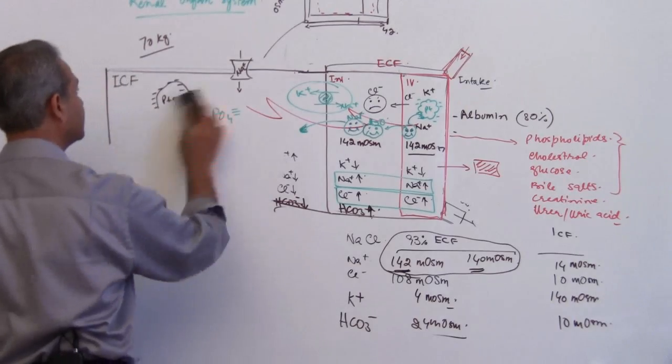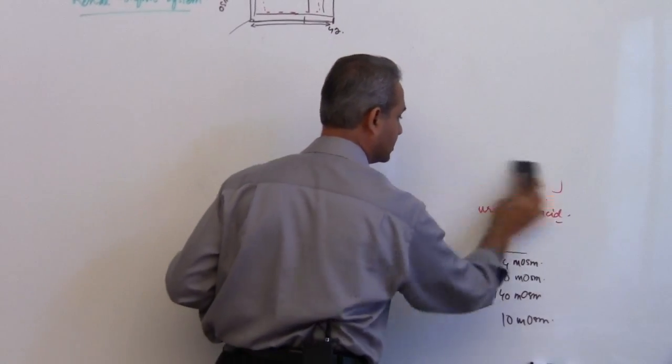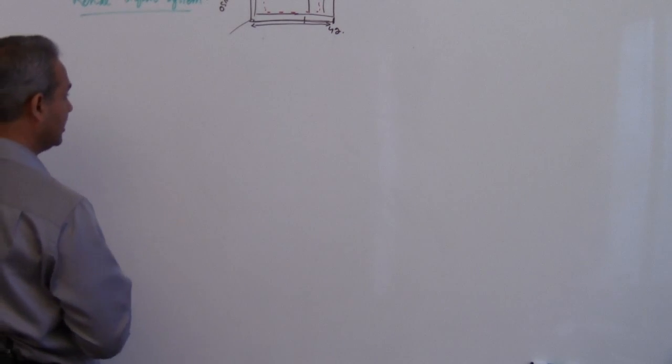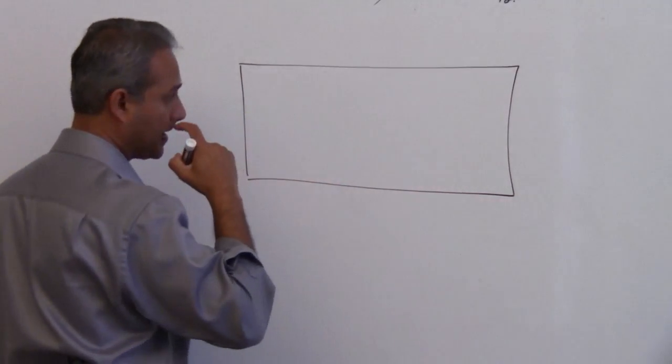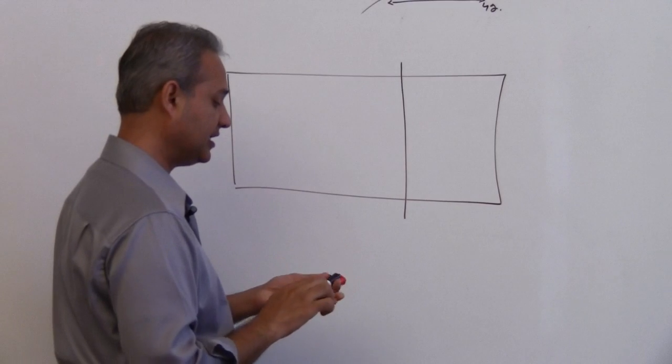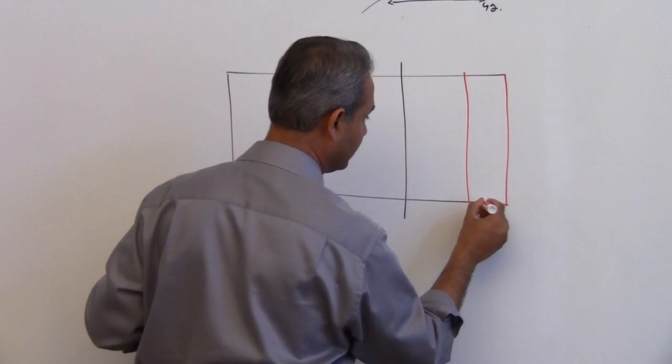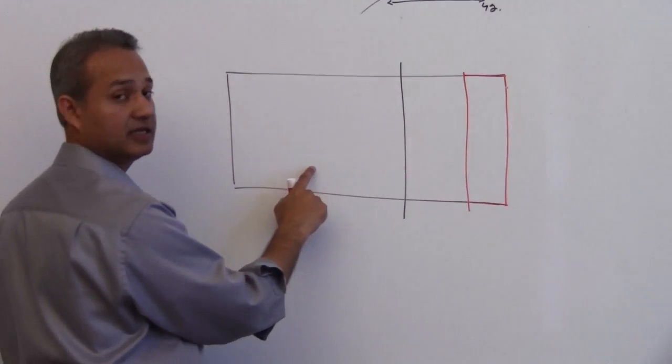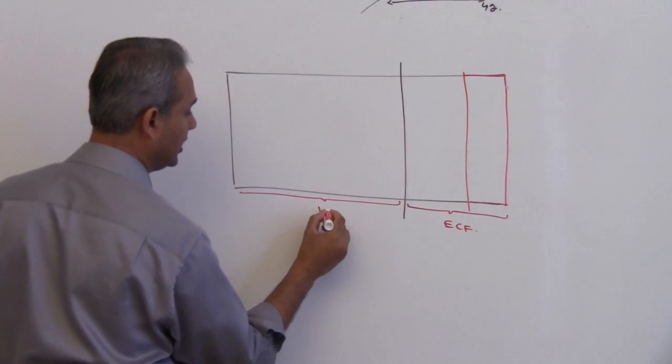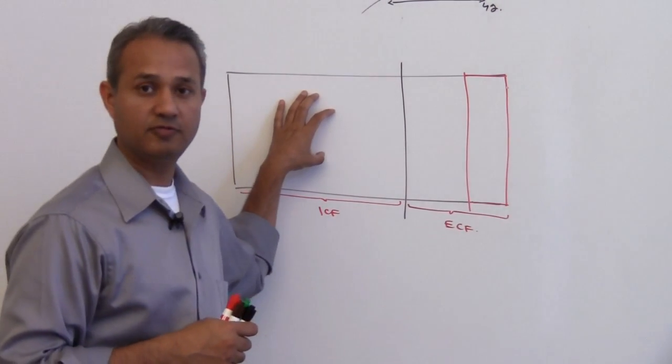In that case, it sometimes becomes necessary to measure the actual volume to understand what is going on. So to understand how do we measure, let us establish some rules for measurement. This is total body water. We know it is divided into ICF and ECF, and then the ECF is divided into interstitial and intravascular. It may be necessary at some point to measure the volume inside the cells.